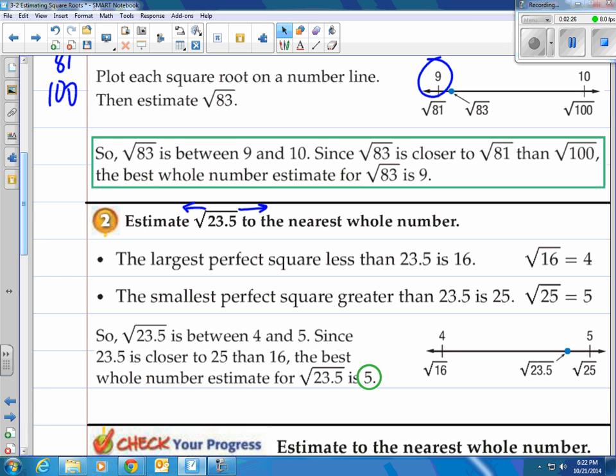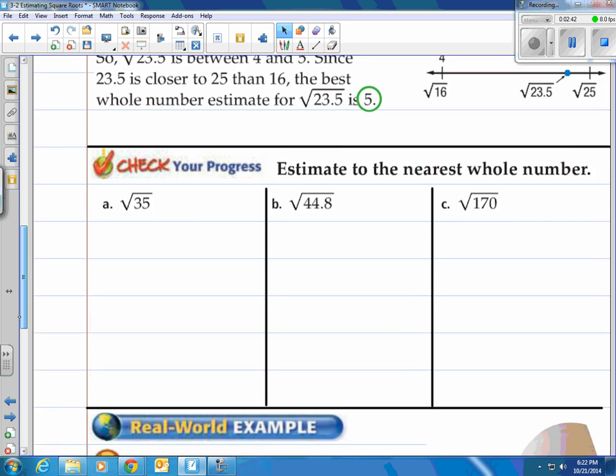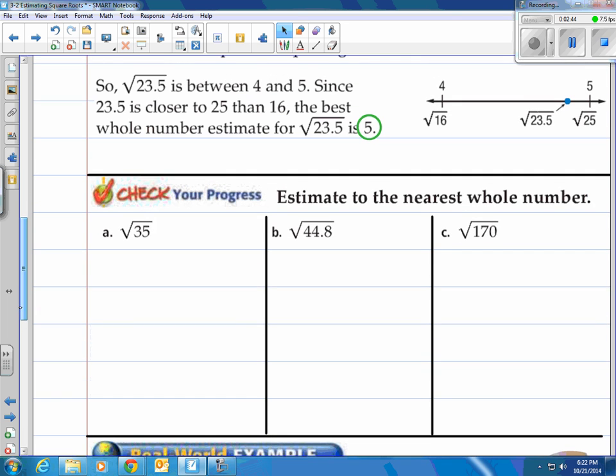So we say 23.5 is between 4 and 5. Since 23.5 is closer to 25 than 16, the best whole number estimate for the square root of 23.5 would be 5. That's called the whole number estimate. But you try these three. Come on back and see how you did.